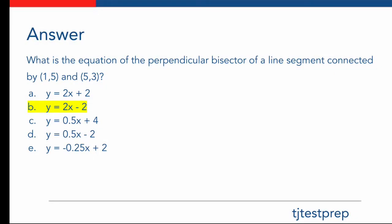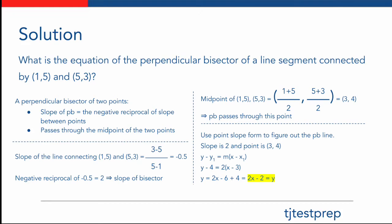The answer here is y equals 2x minus 2. Let's see how we came up with this answer. In order to first solve this problem, you must know what a perpendicular bisector is.